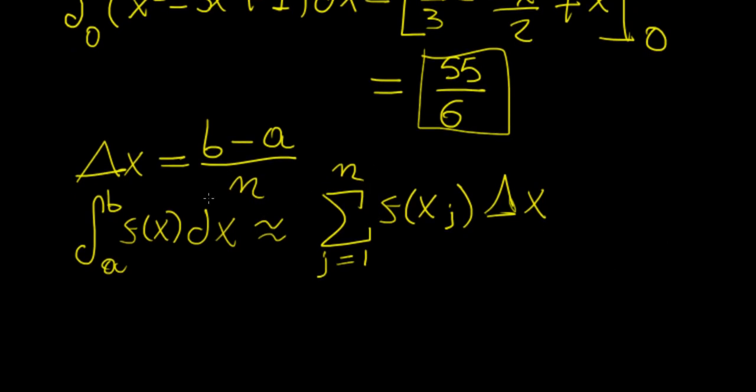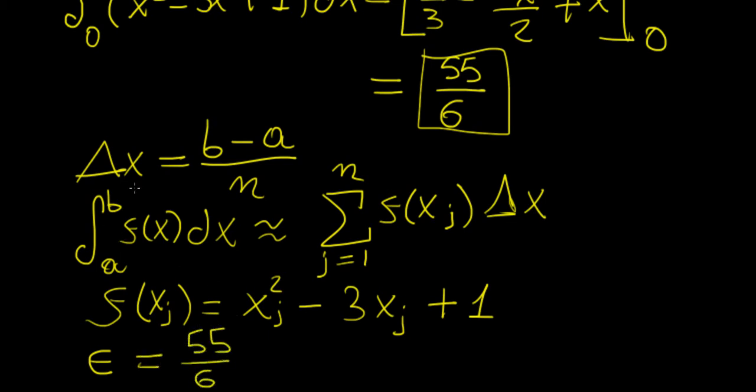The other thing we know is that our function is in this case x² - 3x + 1. We can calculate the error by taking the analytic solution or exact value and subtracting whatever approximation we get from it. This is our approximate value.